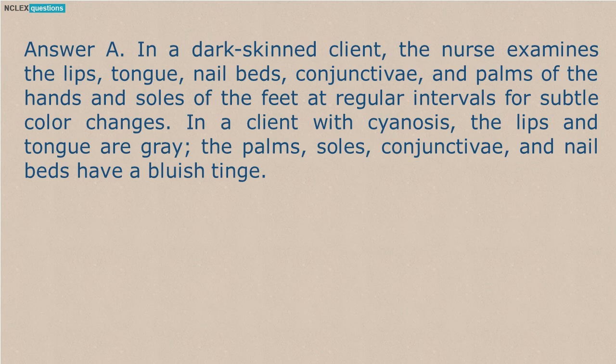Answer A. In a dark-skinned client, the nurse examines the lips, tongue, nail beds, conjunctivae, and palms of the hands and soles of the feet at regular intervals for subtle color changes. In a client with cyanosis, the lips and tongue are gray, the palms, soles, conjunctivae, and nail beds have a bluish tinge.